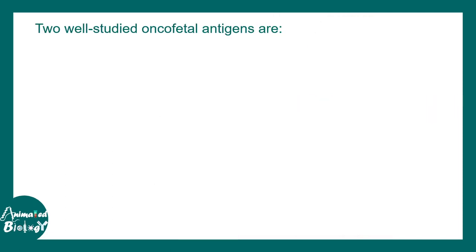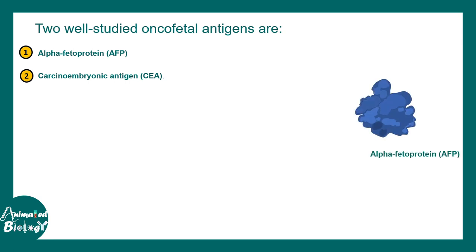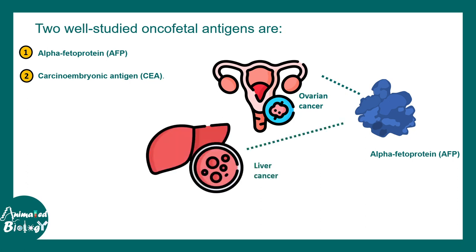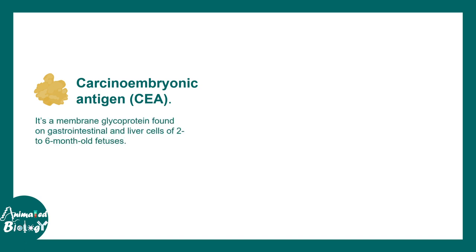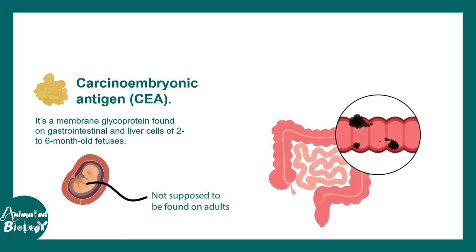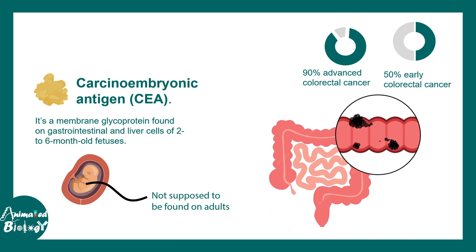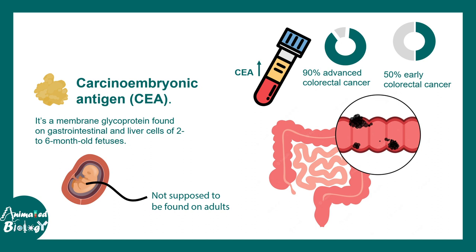There are two well-studied oncofetal antigens: alpha-fetoprotein and carcinoembryonic antigen, or CEA. Alpha-fetoprotein is associated with ovarian cancer, liver cancer, and testicular cancer. Carcinoembryonic antigen is associated with many cancer types; in general these proteins are found in liver cells when the fetus is two to six months old and are not supposed to be present in adults. However, CEA is upregulated and found in colorectal cancer — 90% of advanced colorectal cancer and 50% of early-stage colorectal cancer show CEA elevation in the patient's serum, so it can also work as a biomarker for detection or staging of this cancer.